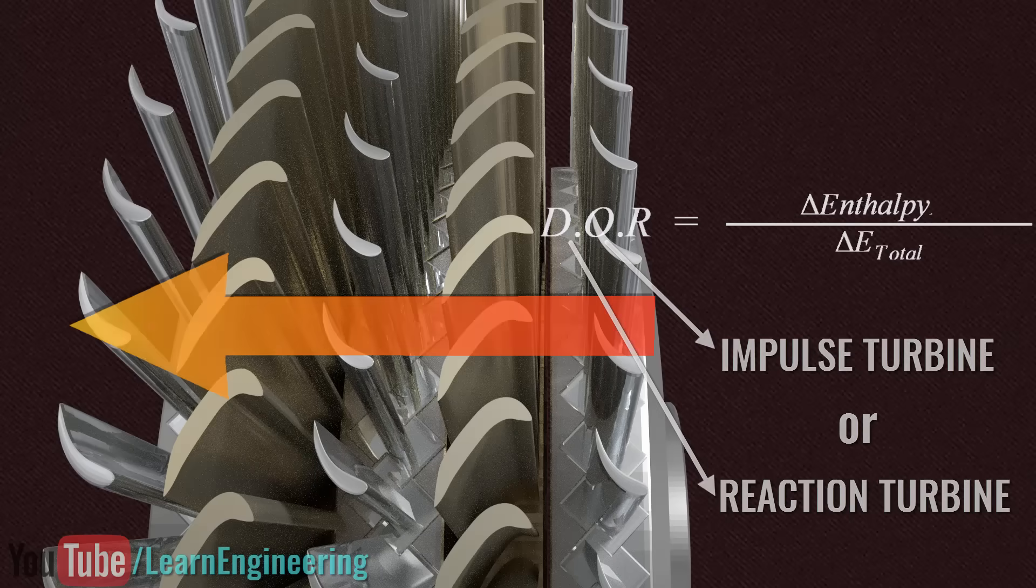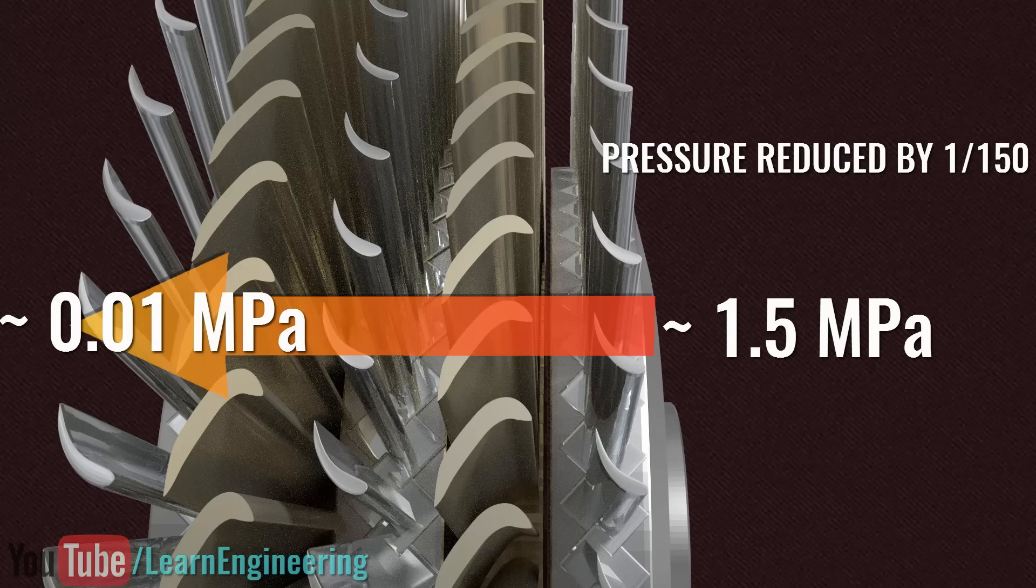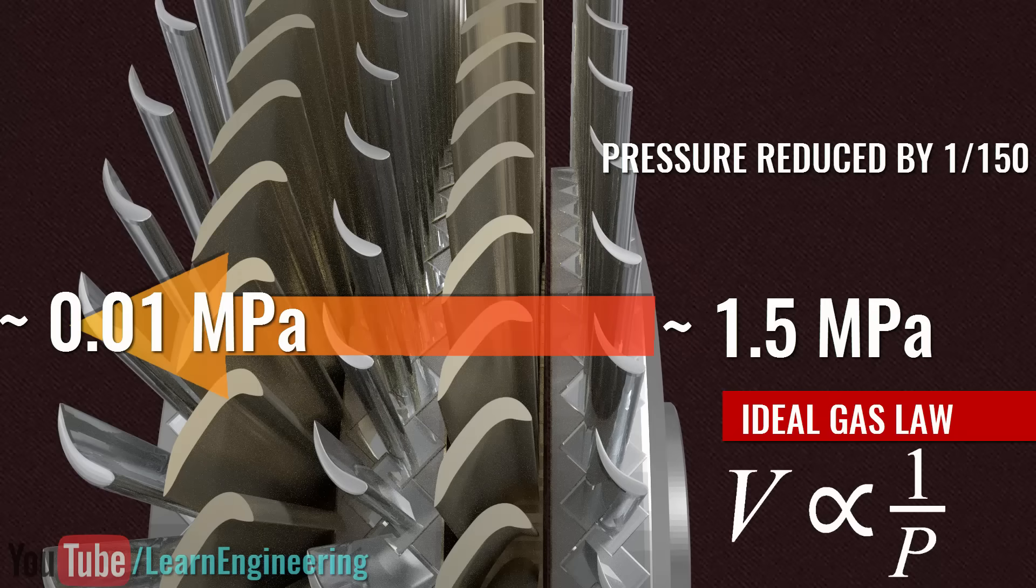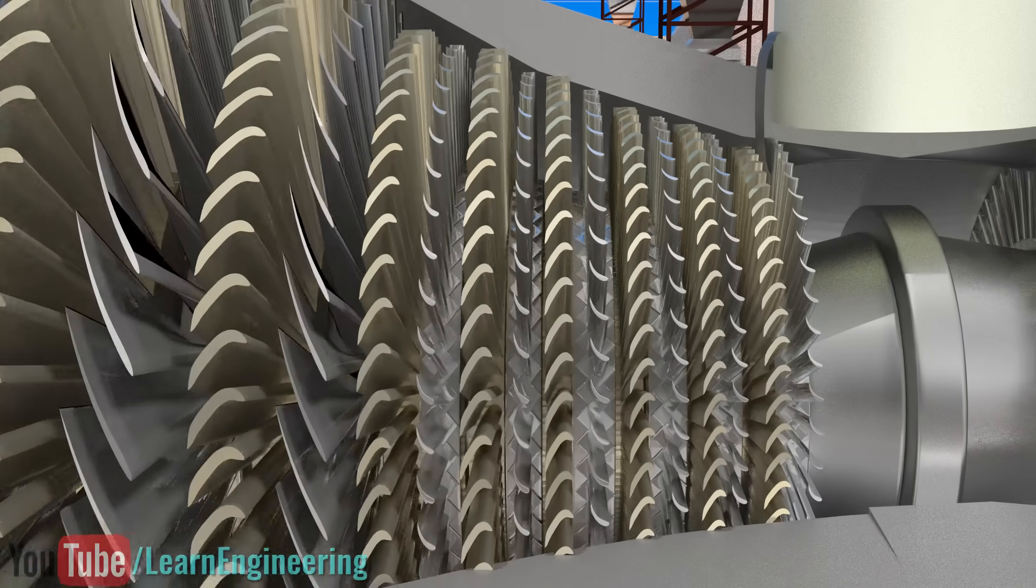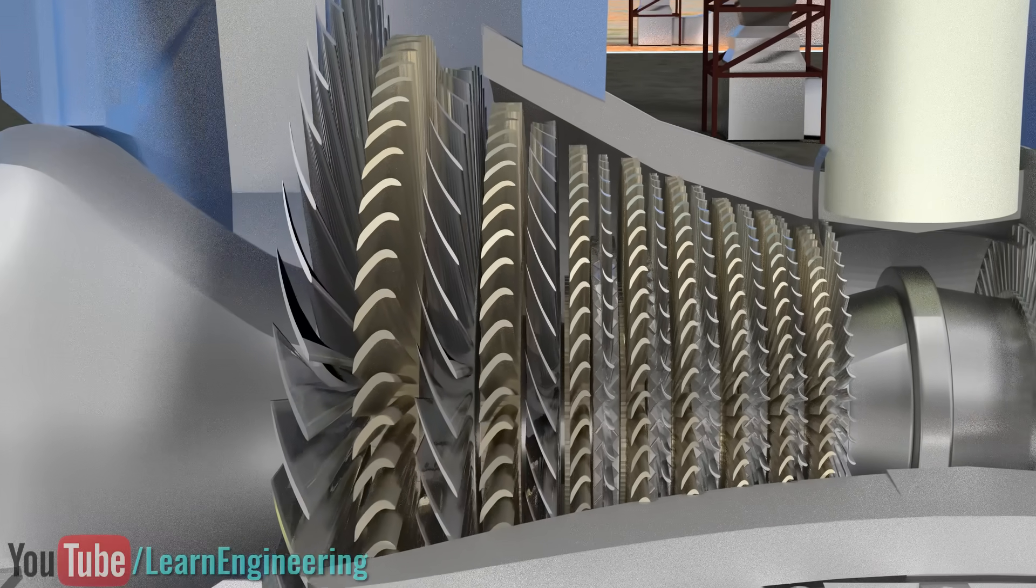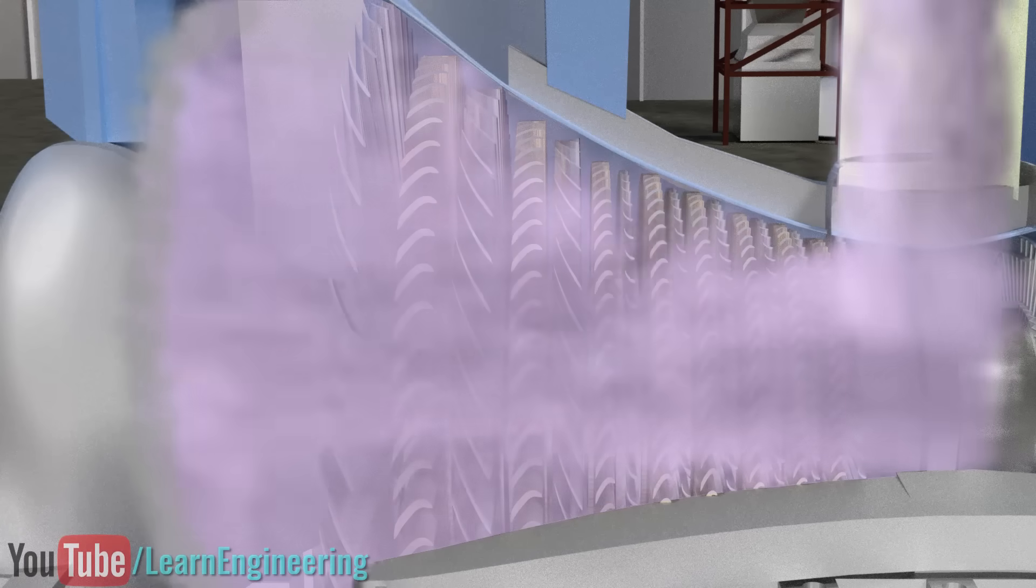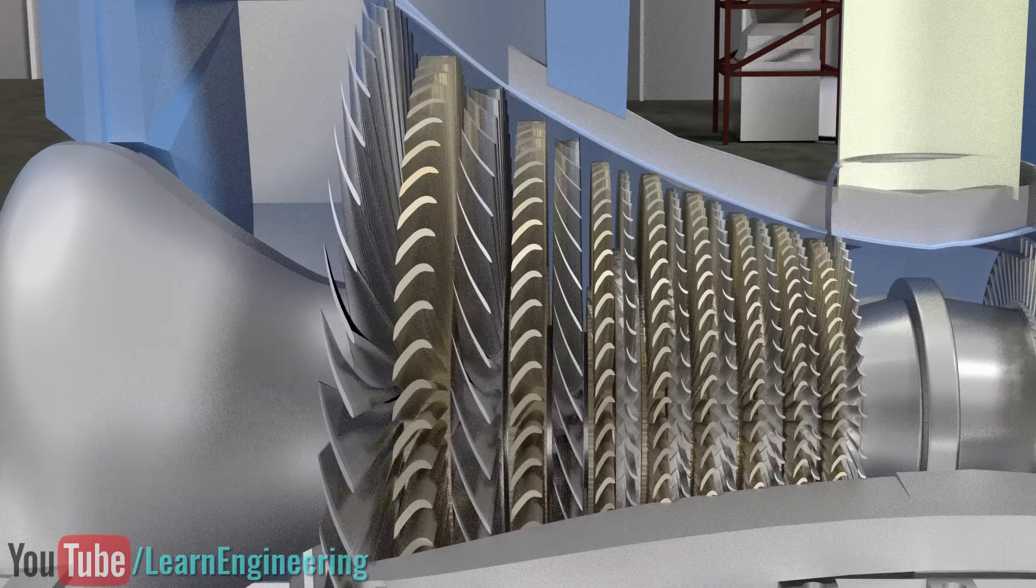As the pressure of the steam undergoes a drastic reduction during steam turbine operation, its volume increases proportionally. To accommodate such an expanded steam, we have to increase the flow area. Otherwise, the flow speed will become too high. This is the reason why the steam turbine blades are too long towards the outlet.